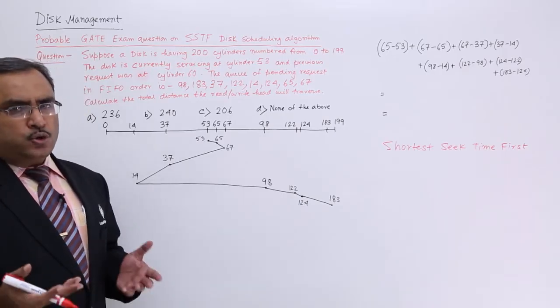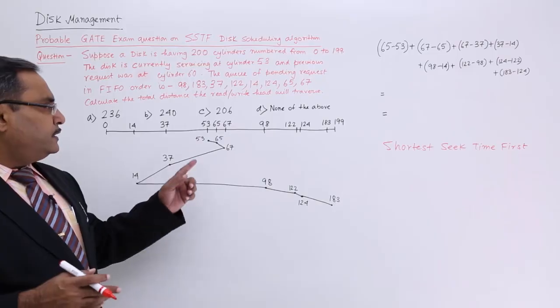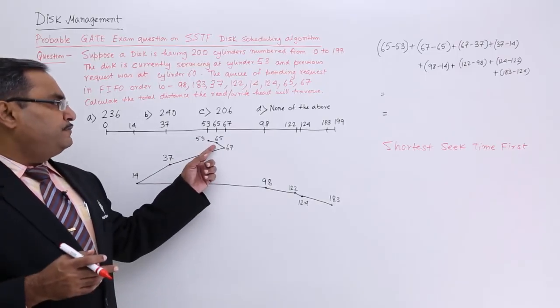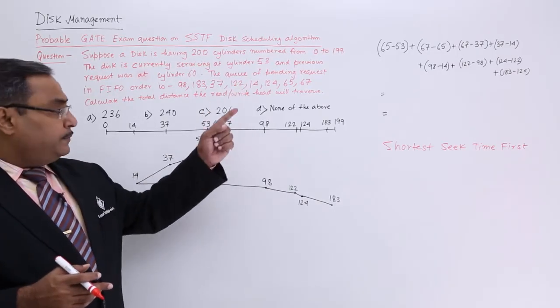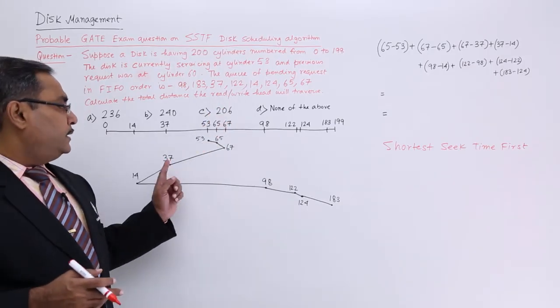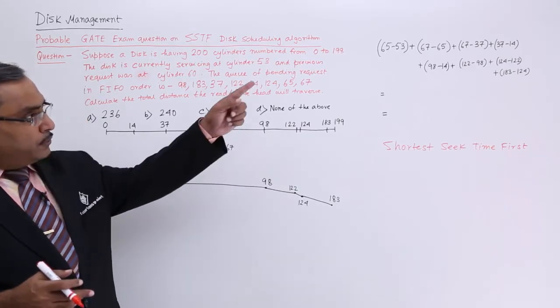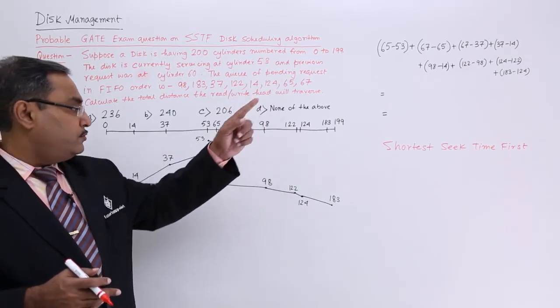To calculate the total or net movement of the read head, it is quite obvious that I shall be going for 65 minus 53 first term, 67 minus 65 second term, 67 minus 37, then 37 minus 14 fourth term, that is the last one in the first row.